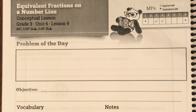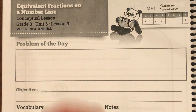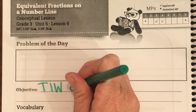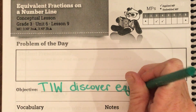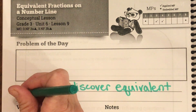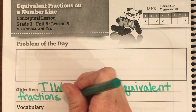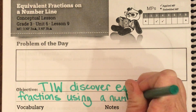Good morning, third graders. Today we're on page 139 of your student journal, page 139. Our objective today is: today I will discover equivalent fractions using a number line.